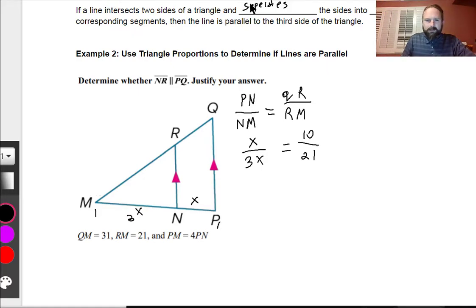Well, if I divide this out, I get 1 third is equal to 10 over 21. Is this a proportional equation right here? No, they're not equal, so therefore, NR cannot be parallel to PQ. These would have to be equal to each other. Let's go on.